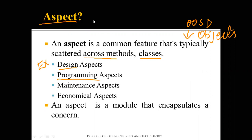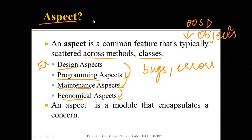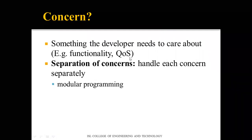Examples of aspects include designing aspects, programming aspects, maintenance aspects, and economical aspects — along with historical and organizational aspects. These different aspects such as design and programming aspects should not overlap onto one another, as overlaps can introduce bugs or errors within the software. Aspects encapsulate a concern — something a developer needs to focus on or care about, such as functionality or quality of service.